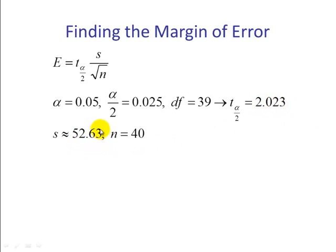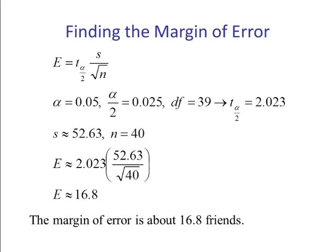S can be computed using the raw data. We can put that in Minitab or StatCrunch or use the graphing calculator. The sample standard deviation s is 52.63 rounded to two decimal places, and our sample size is 40. We have all the values needed to compute the margin of error. So we substitute them in. Our t α/2 is here. This is our standard error. If we multiply these two values, we get E ≈ 16.8. The margin of error is about 16.8 friends.